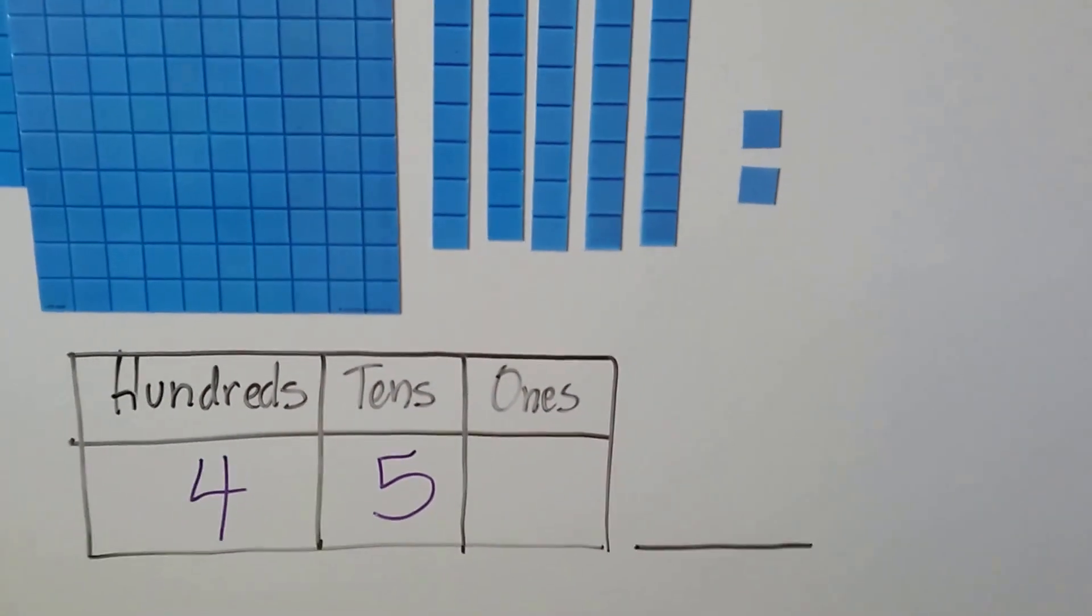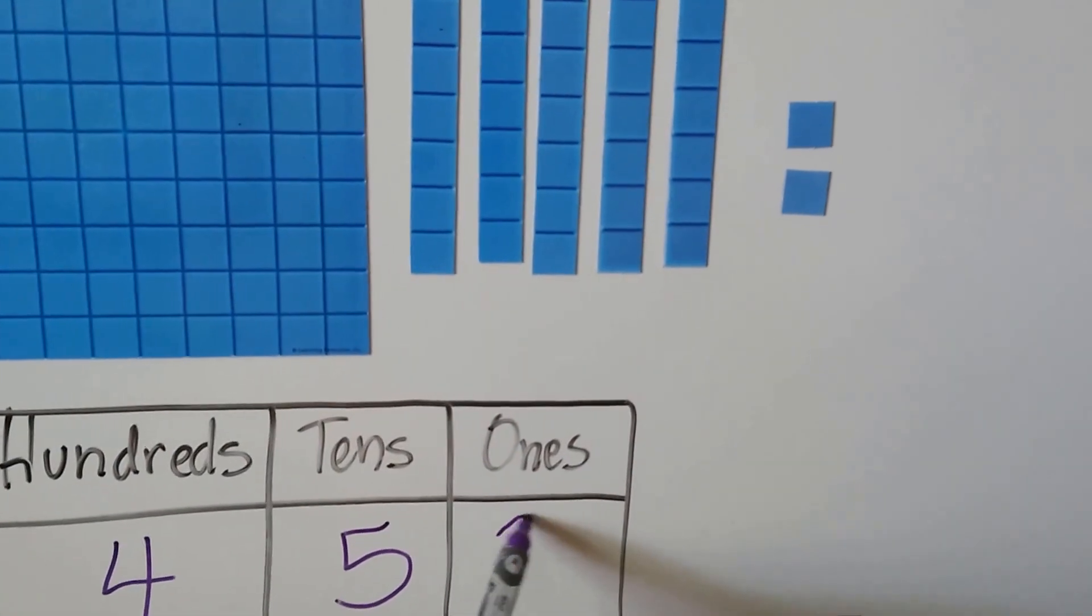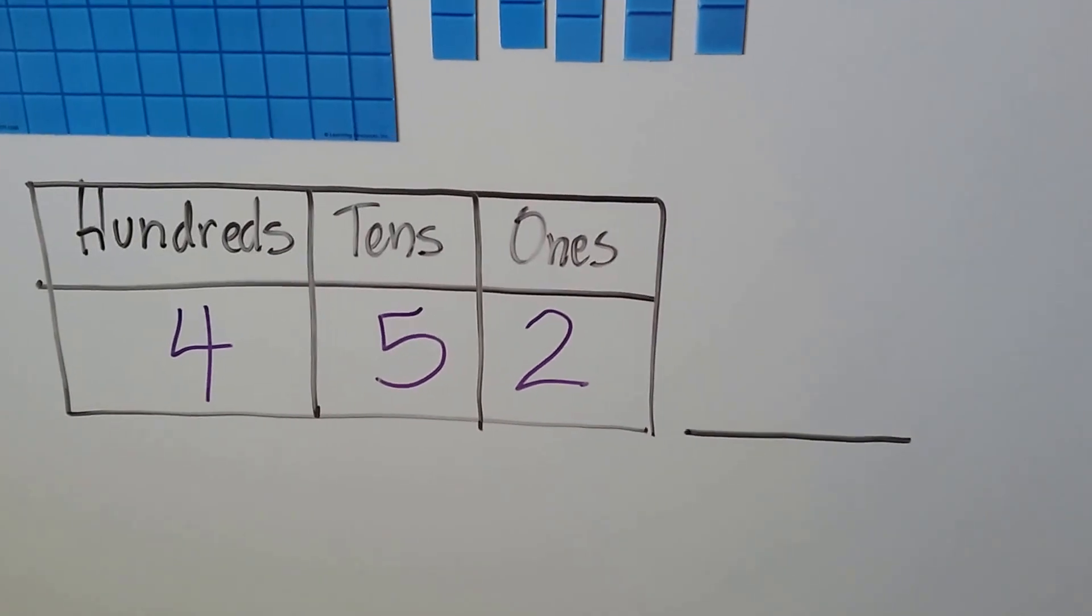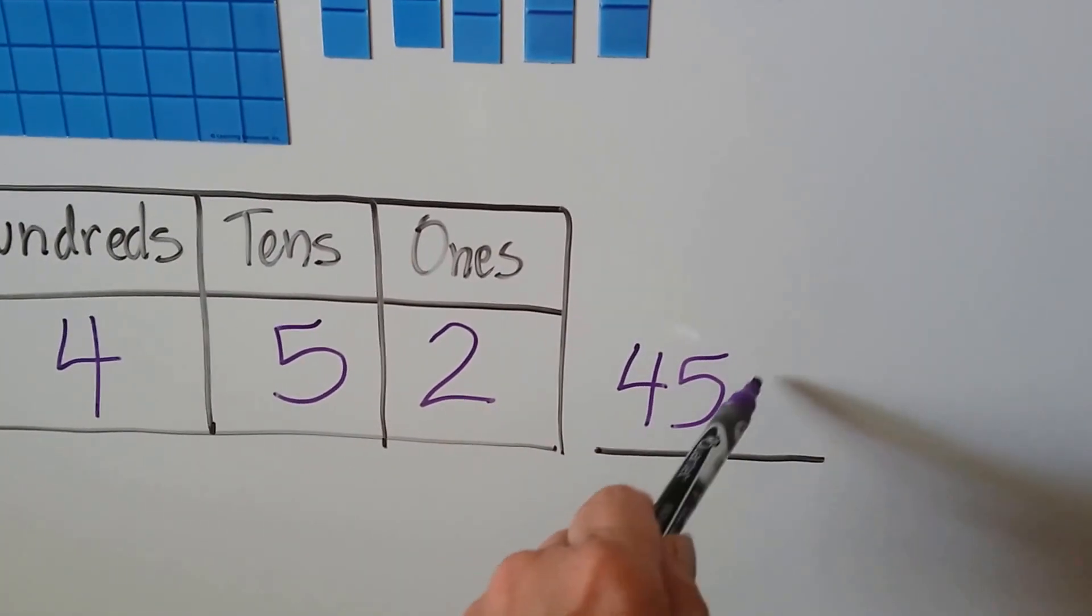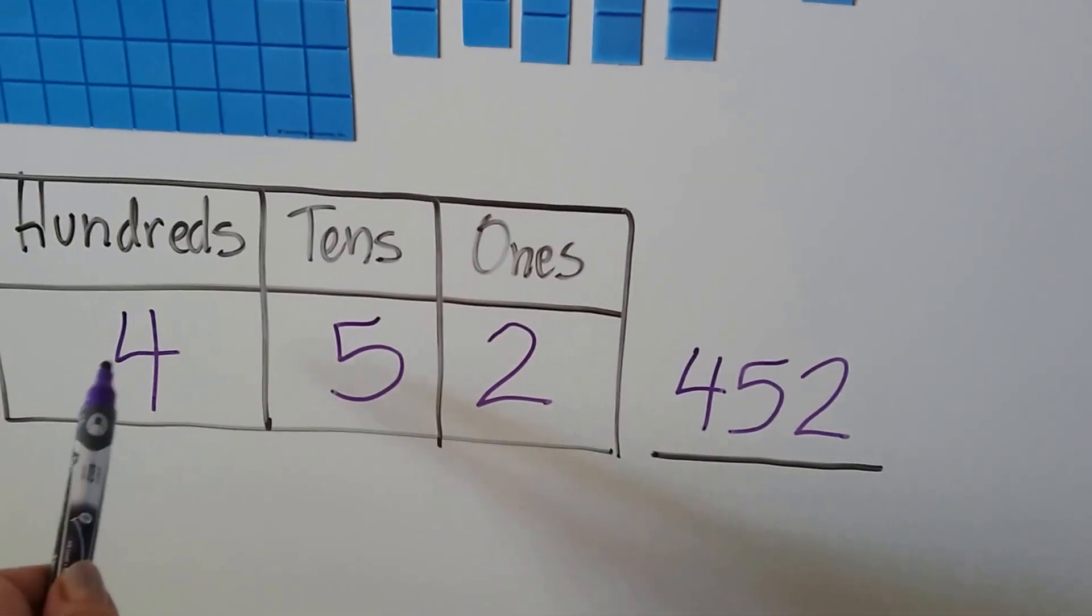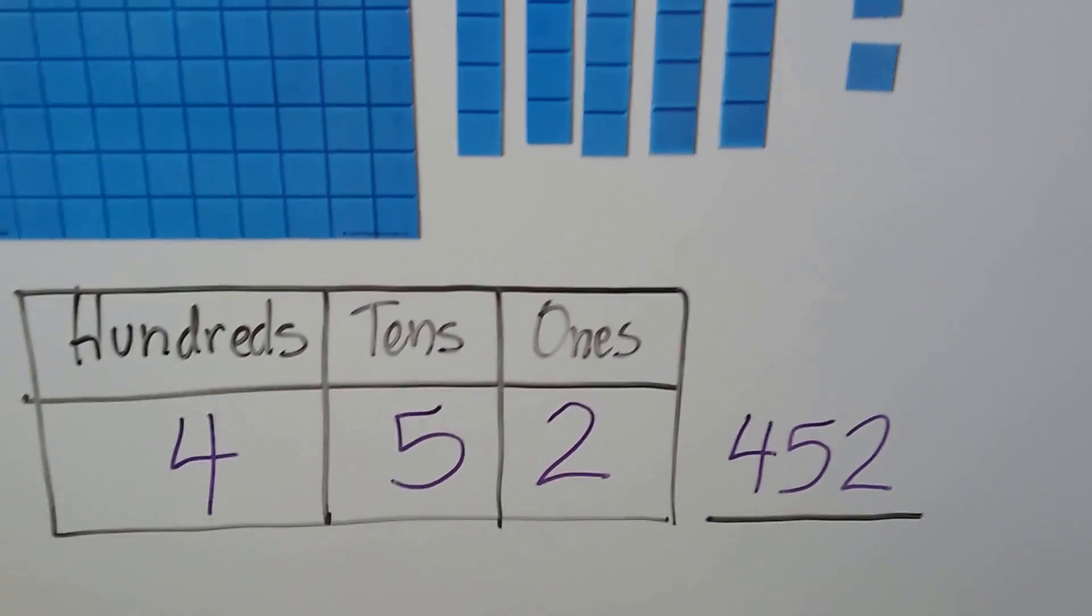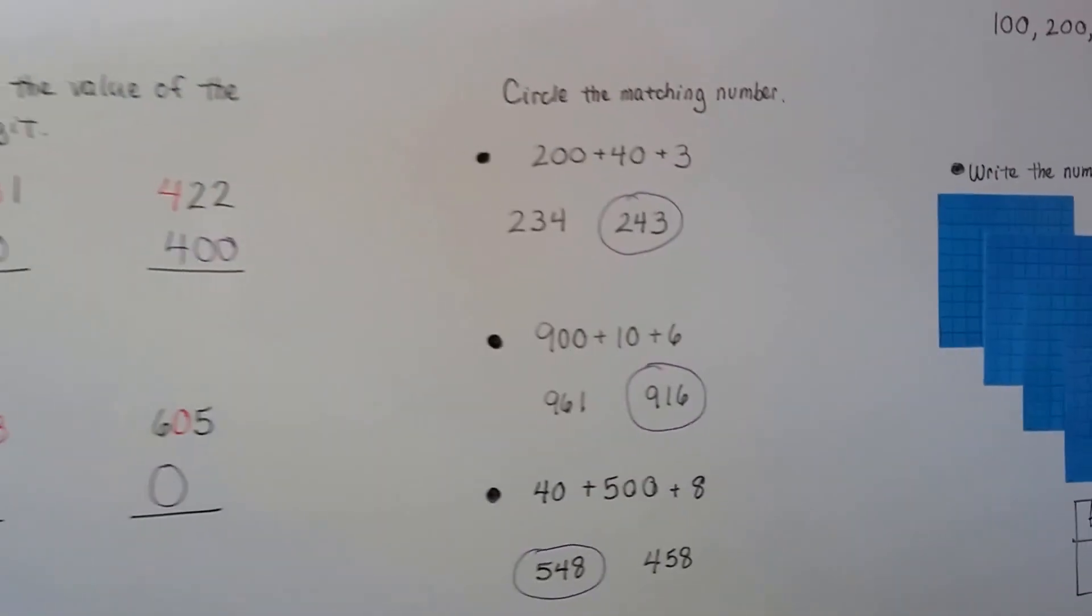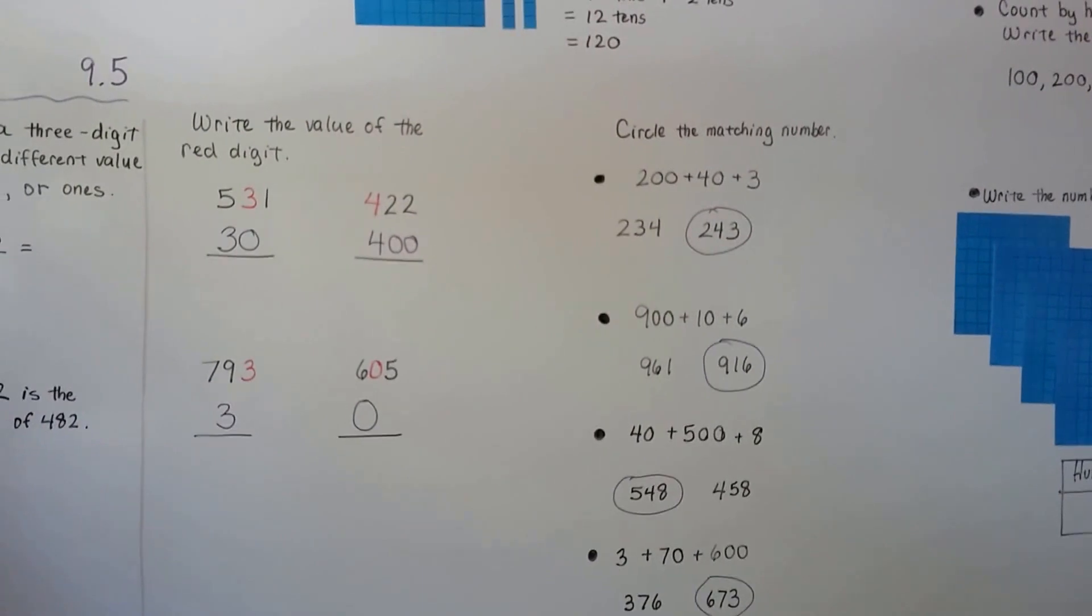How many ones? Just 2, right? Do you see the number we have? We have 452. 4 in the hundreds place, 5 in the tens place, 2 in the ones place. See?